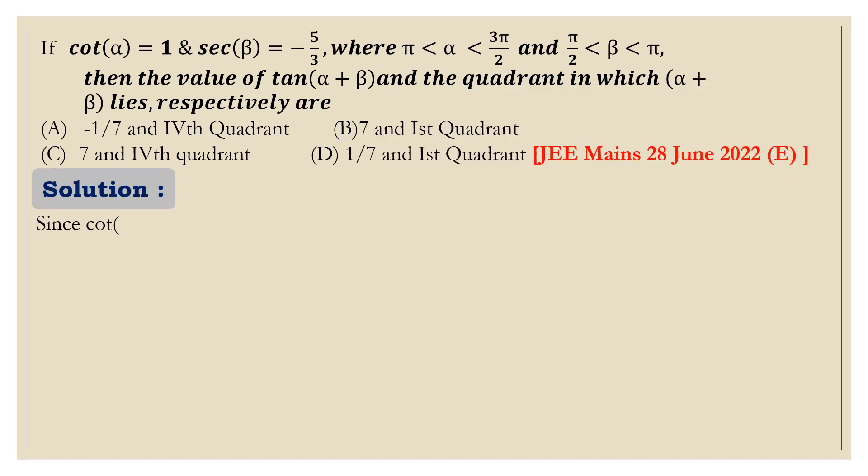Let's see the solution step by step. Since cot α equals 1, so tan α is also 1 because tan α is 1 by cot α. Given that sec β equals minus 5 by 3, so tan β we can find is equal to minus 4 by 3.